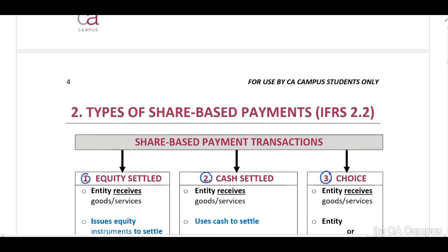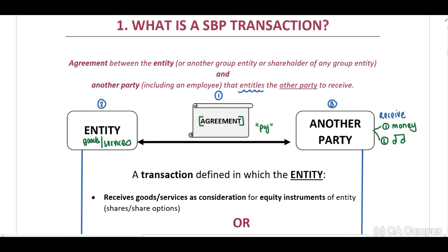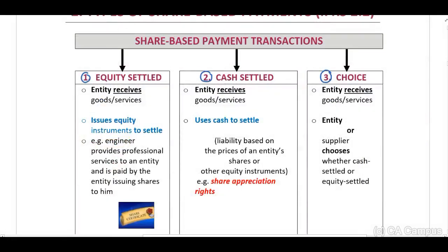The entity will receive goods or services and provide either money or equity instruments. IFRS 2 classifies transactions into: type one — cash settled; type two — equity settled; type three — a choice for either the entity or the other party. The other party can be an employee who provides a service in terms of their employment contract. With equity settled, the entity issues equity instruments to settle for the goods or services received.